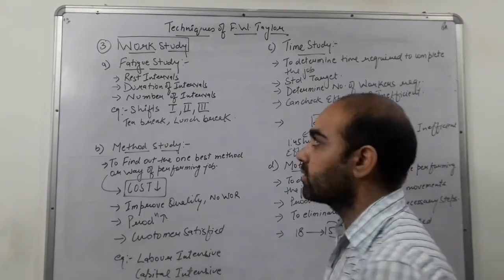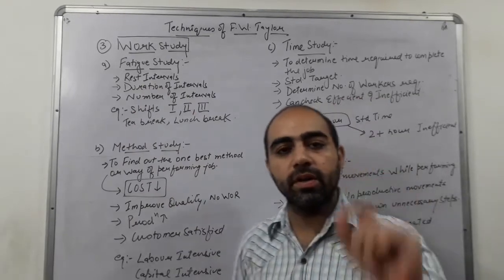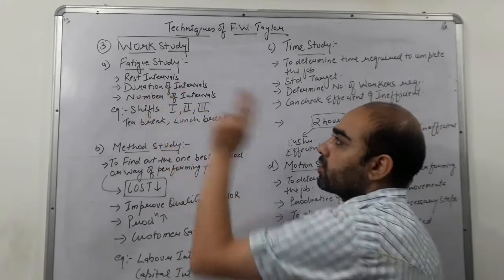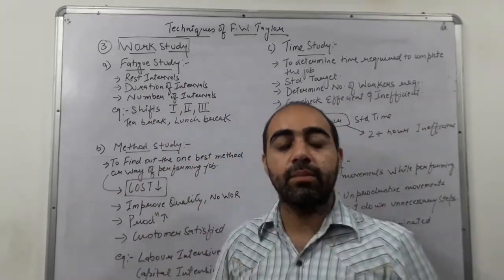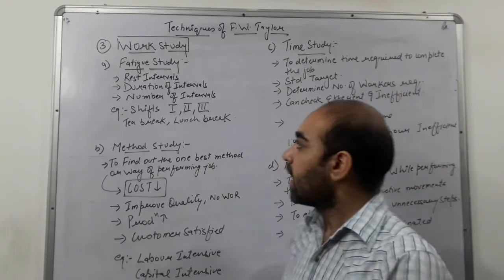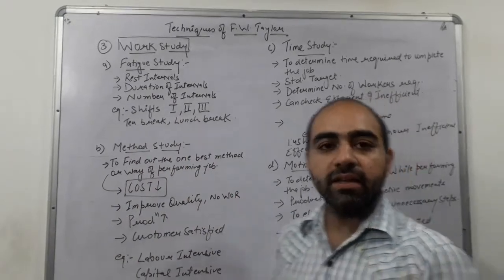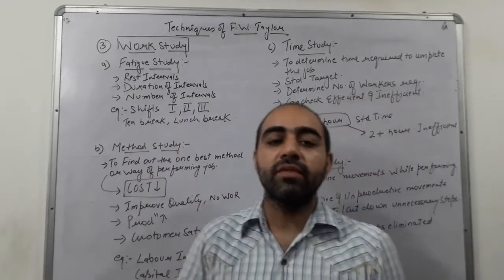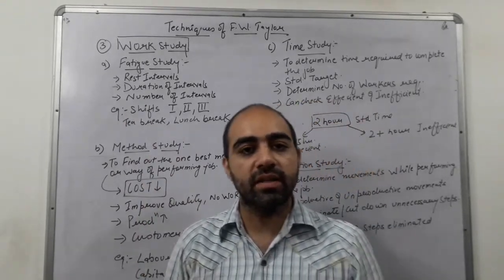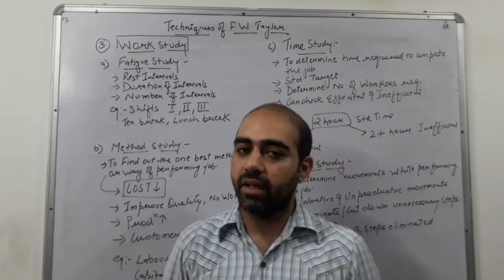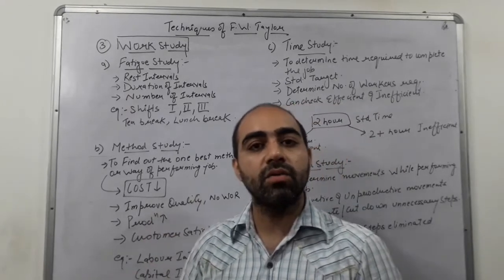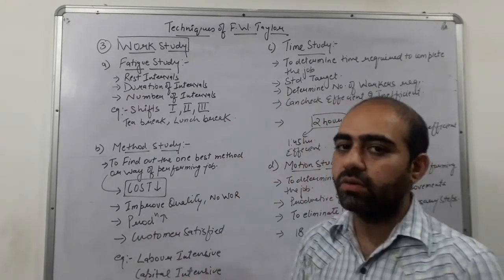To summarize the key points: first, proper rest intervals should be there in an organization. Second, determine the duration of rest intervals — whether 15 minutes or 20 minutes — depending upon the work and the organization. Third, determine the number of rest intervals. A worker might get two or three intervals: a morning tea break, a lunch break, and an evening tea break.